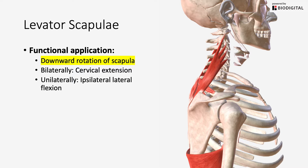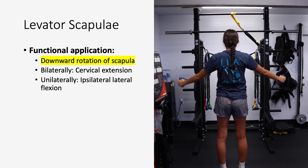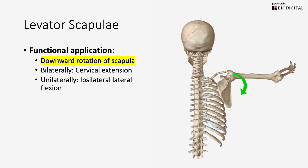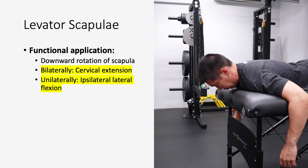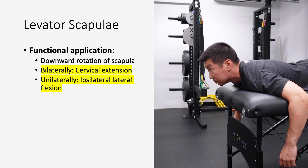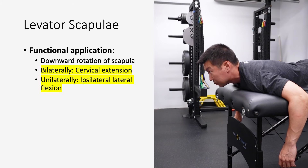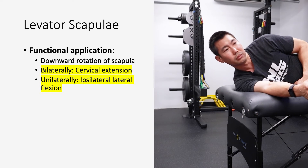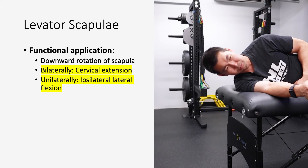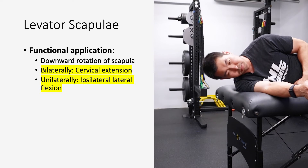The functional application of the levator scapulae is that it contributes to downward rotation of the scapula, but more importantly it's going to act on your cervical spine — bilaterally it's going to create cervical extension, and unilaterally it's going to create ipsilateral lateral flexion, meaning lateral bending to the same side that is contracting.